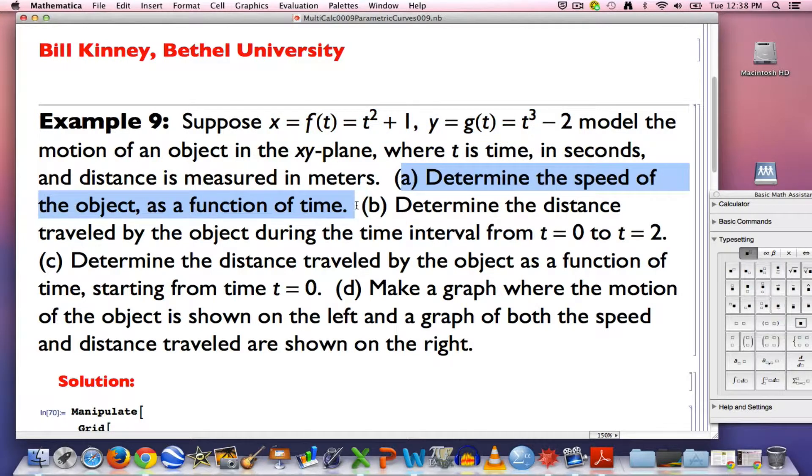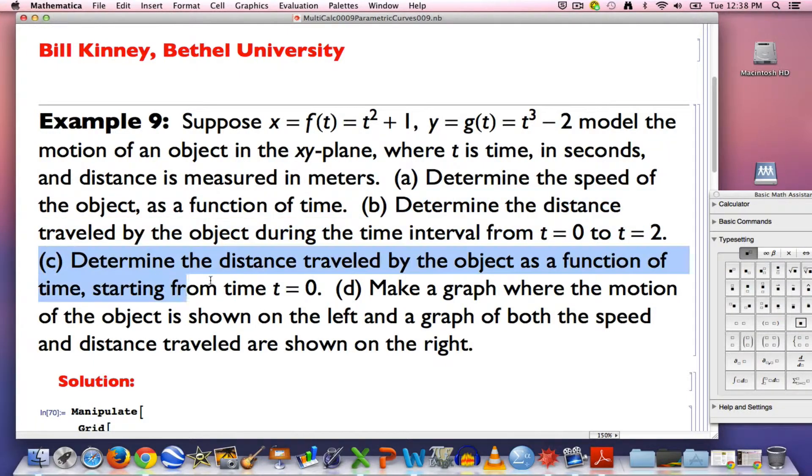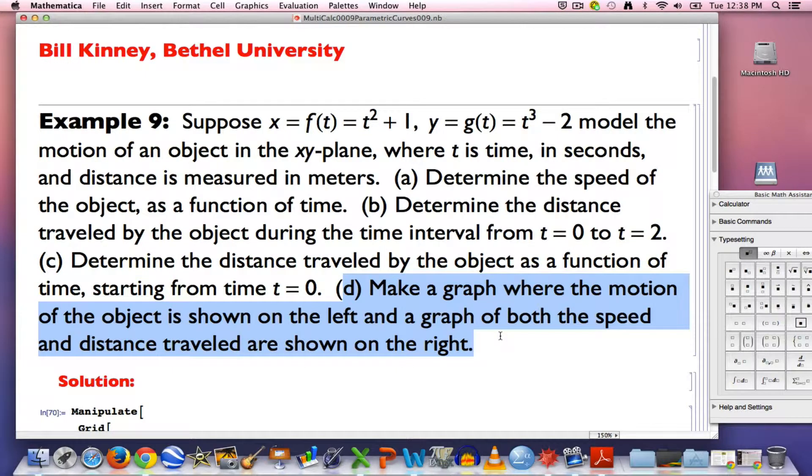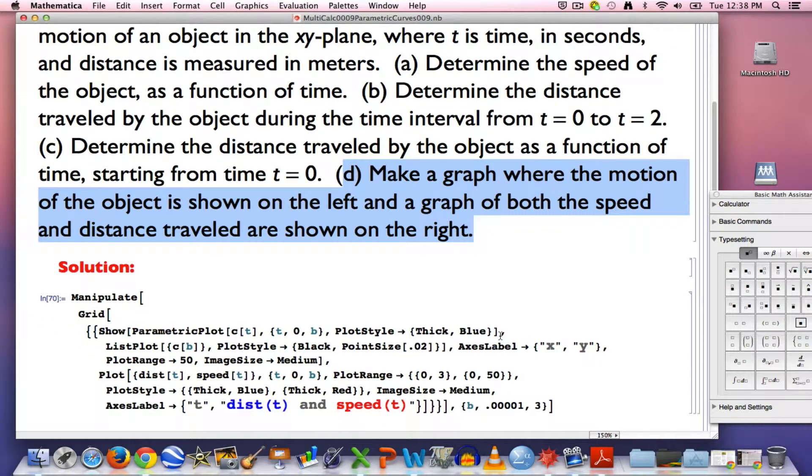First, we want to figure out the speed of the object as a function of time. We did that in the last video, I'll do it again in this one. Something new in this video is I will determine the distance traveled by the object. First, in the time interval from t = 0 to t = 2. Secondly, more generally, more abstractly, we will determine the distance traveled by the object as a function of time, starting from time equals 0. And finally, we will make a graph where there's a graph on the left showing the motion of the object, and a graph on the right showing both the speed and the distance traveled. I've actually already typed in the code for part d, so let's focus on parts a, b, and c.